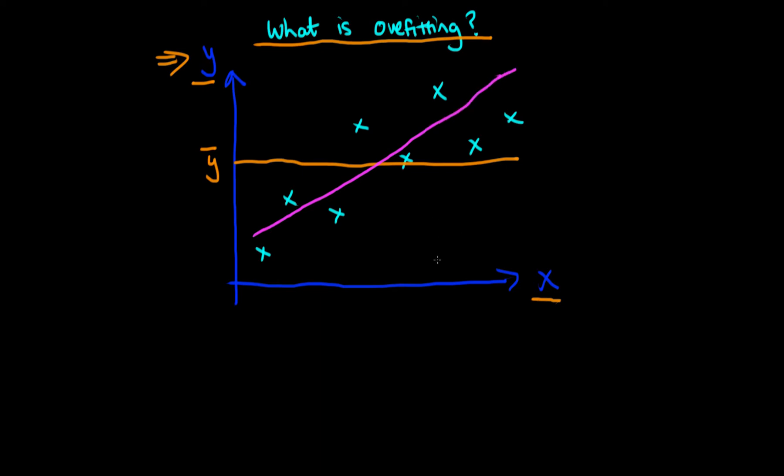Whatever value of x we have, all we do is draw a line up from that value of x up to our pink line here, and then we find the value of y that corresponds to. So that would be our prediction.